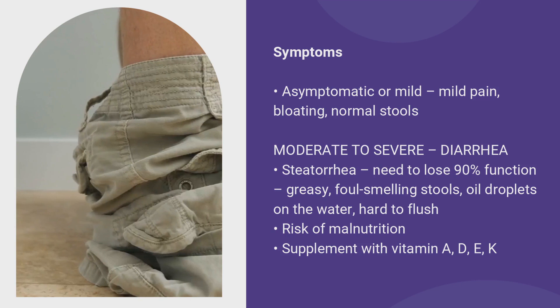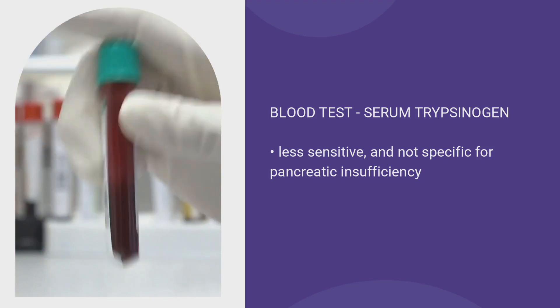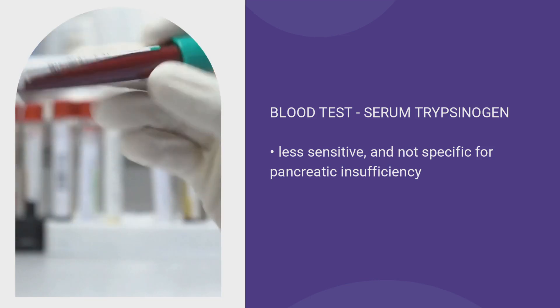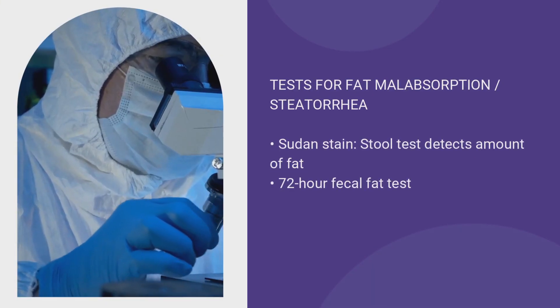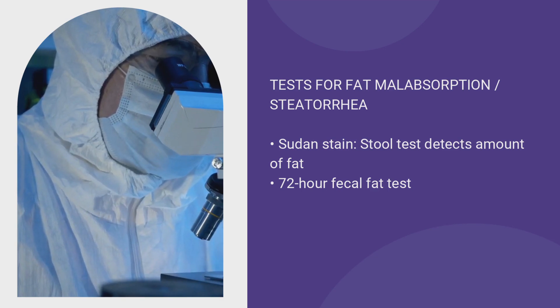Patients can become quite thin, and fat-soluble vitamin deficiencies can occur. Regarding whether a blood test can replace the stool test: there is a blood test called serum trypsinogen, but it's not as sensitive or as good as fecal elastase, which is why we rely on fecal elastase. There are also other stool tests for steatorrhea: a Sudan stain, which stains stool for fat globules, and the dreaded 72-hour fecal fat test, where you collect all stools for 72 hours while eating a high-fat diet, and the fat content is analyzed as a stress test for bowel absorption.